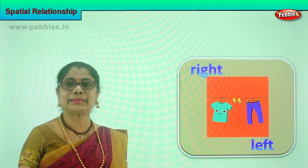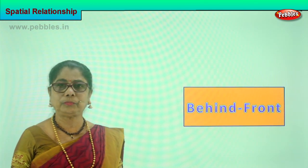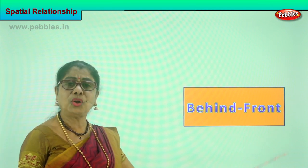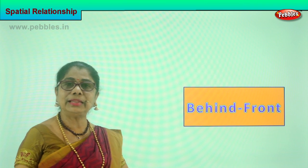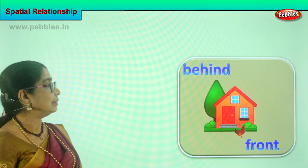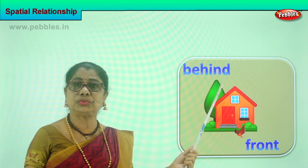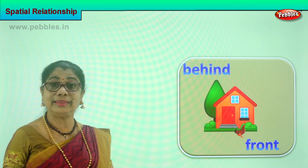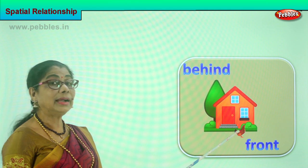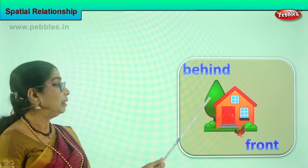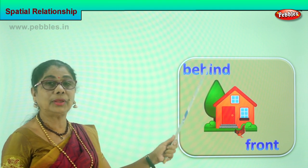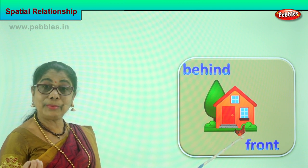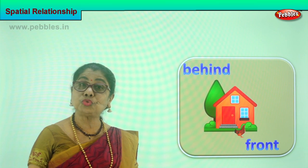Now let's look at another exercise. In spatial relationship, we are talking about behind and front. What is behind? What is in front? Let's look at the picture and understand. Behind — what is behind the house? There is a tall tree behind the house. What is in front of the house? We have a hen in front of the house. A hen is standing in front of the house. There is a tall tree behind the house. Behind, in front. Front of the house — a little brown hen. Behind — some tall trees.